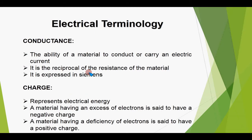Conductance is the opposite of resistance. While resistance is the opposition to the flow of electrons, conductance is the ability of a material to conduct or carry an electric current. It is the reciprocal of the resistance of the material and is expressed in siemens — so where resistance is measured in ohms, conductance is measured in siemens.